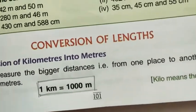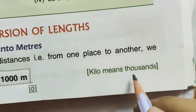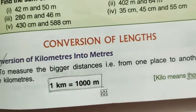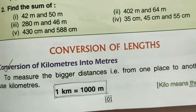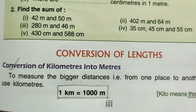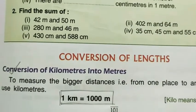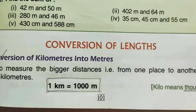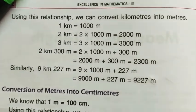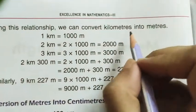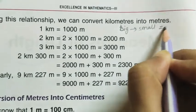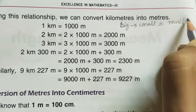A thousand meters make one kilometer. Kilo means thousand. So if we put a thousand meters together, it will form one kilometer. Basically, if we convert kilometer into meter, we multiply the kilometer value by one thousand. Always keep in mind: for conversion of bigger to smaller units, we have to multiply.